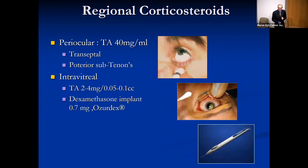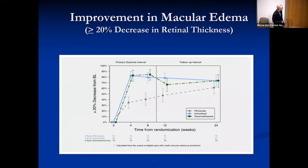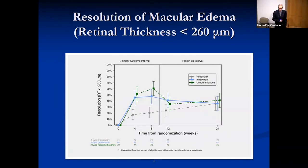For regional corticosteroids, periocular corticosteroids can be administered transeptally or via posterior sub-Tenon's injections, or intravitreally as triamcinolone or the approved dexamethasone implant Ozurdex. We were a principal study investigator for the POINT trial, a randomized controlled trial evaluating the safety and efficacy of regional corticosteroids for patients with active uveitis and macular edema. We compared periocular versus intravitreal approaches. There was a statistically and clinically significant decrease in central macular thickness at eight weeks for the intravitreal approaches, as well as significant improvement in resolution of macular edema compared to periocular.